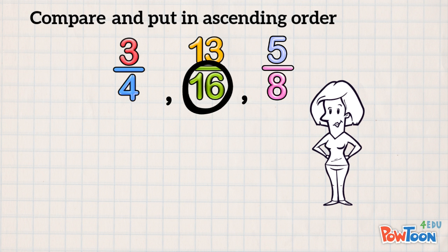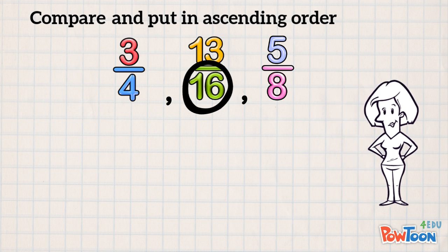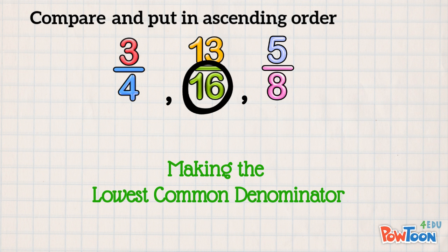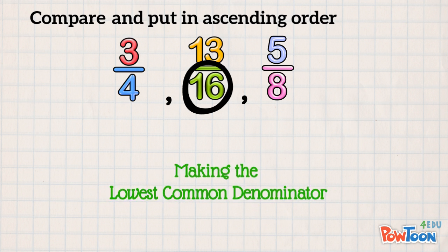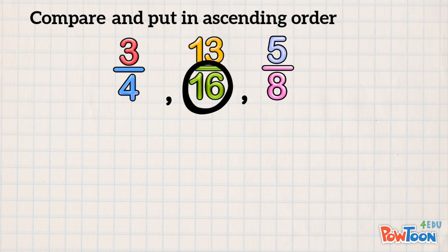Because it's the lowest number that works with 4, 8, and 16! This is called making the lowest common denominator! The denominator will be common to all the fractions here! So let's make an equivalent fraction of 3 quarters with a new denominator of 16!